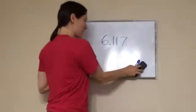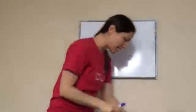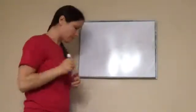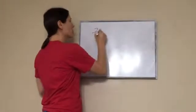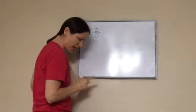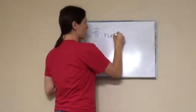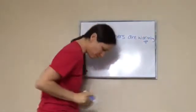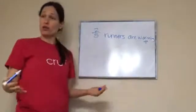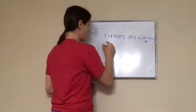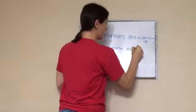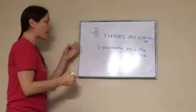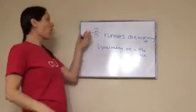Okay, 6th grade lesson 117. This is on finding a whole when a fraction is known. Here's the example story problem: Two-fifths of the runners in the race are warming up. How many runners are in the race? Now, the first thing you want to do is draw a picture of parts of a whole.